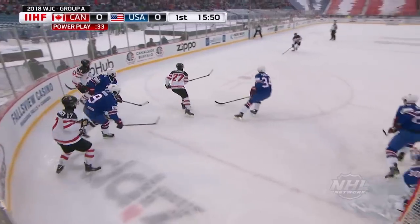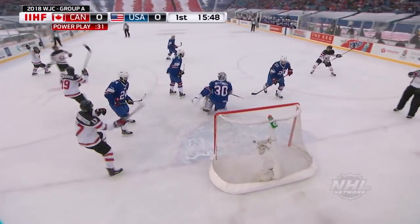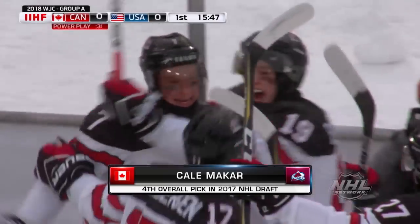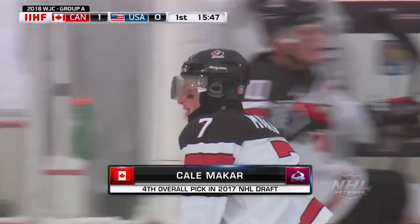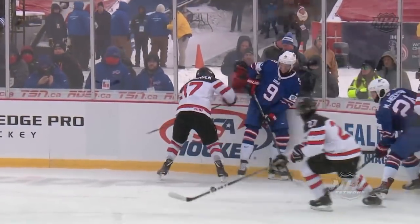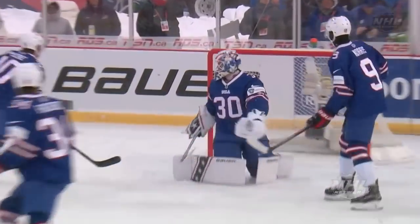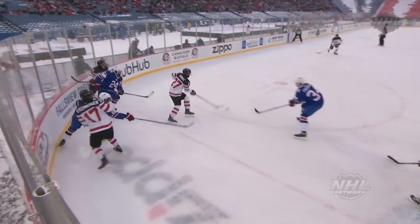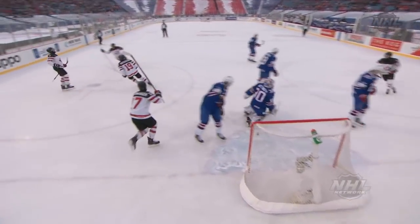Smashed into the boards is number 9 Josh Norris. That one in front and score! Canada's on top 1-0. A wrister from the top of the circle to beat Jake Ottinger — it's 1-0 Canada. A power play goal and the Canadians draw first blood. What a shot by the product of the University of Massachusetts.